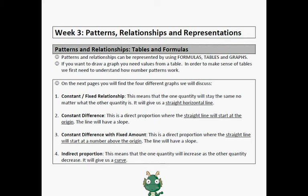Welcome. This is this week's handout, Week 3: Patterns, Relationships and Representations. This is quite a difficult part to start with, so let's start. First of all, we're going to do tables and formulas. Let's read through the first part. Some of it is revision of grade 10 work. Patterns and relationships can be represented by using formulas, tables and graphs. If you want to draw a graph, you need values from a table. In order to make sense of tables, we first need to understand how number patterns work. On the next pages, you will find the four different graphs that we will discuss.